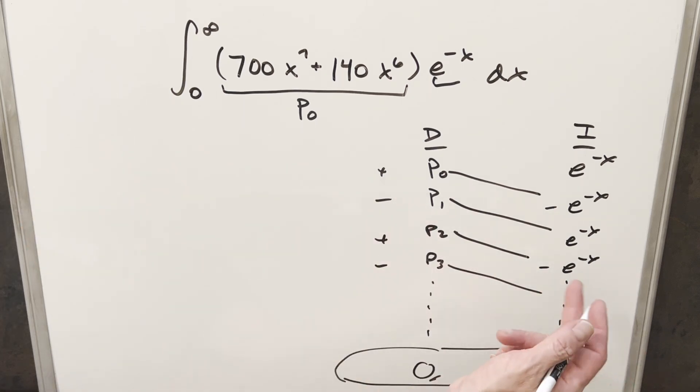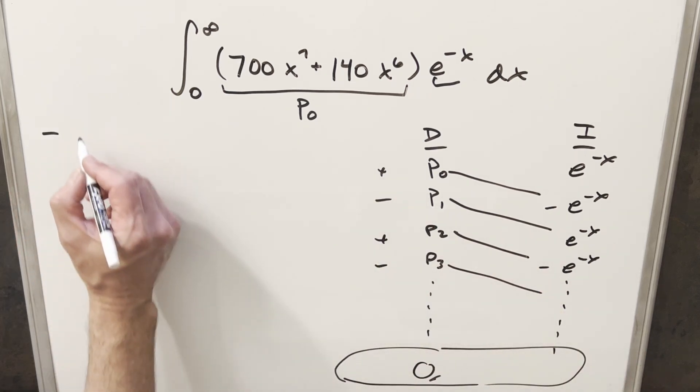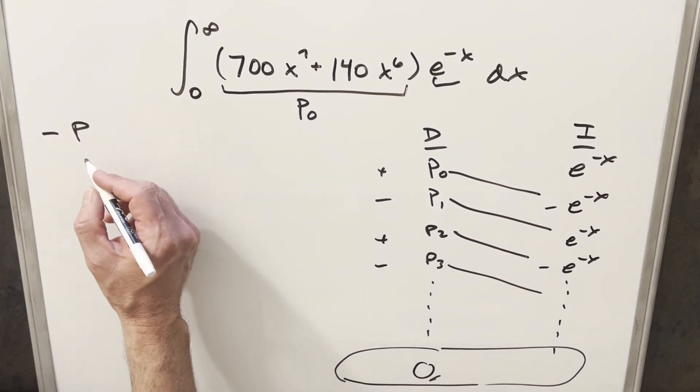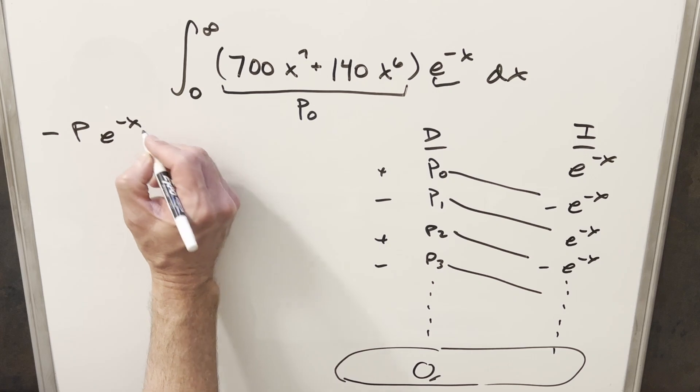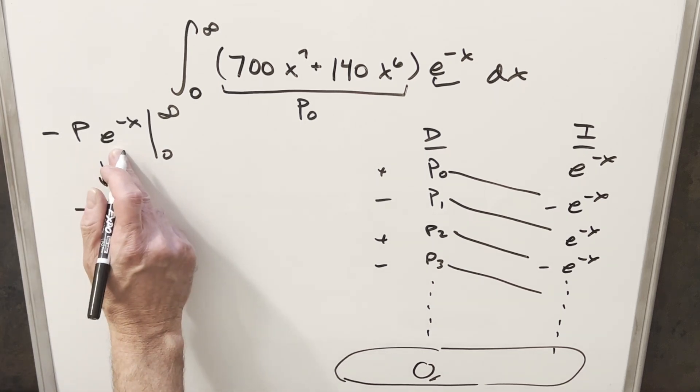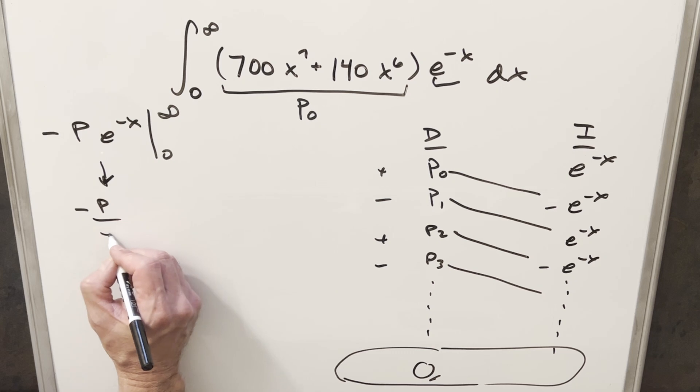So every one of these diagonals is going to look something like -P, just a general polynomial, which we don't know what it looks like right now, and then we're going to have an e^(-x). And this is going to be evaluated from 0 to infinity. Now, first evaluating this at infinity, it's going to be a limit when x approaches infinity. But I'm not going to really worry too much about that because we can just kind of bring the e^(-x) into the denominator.